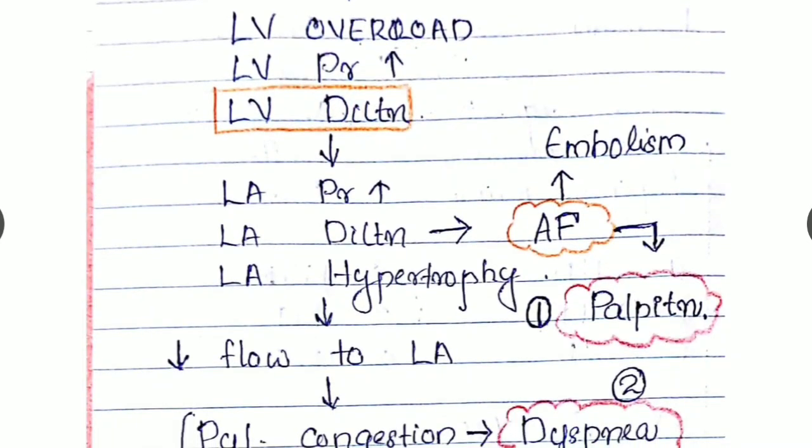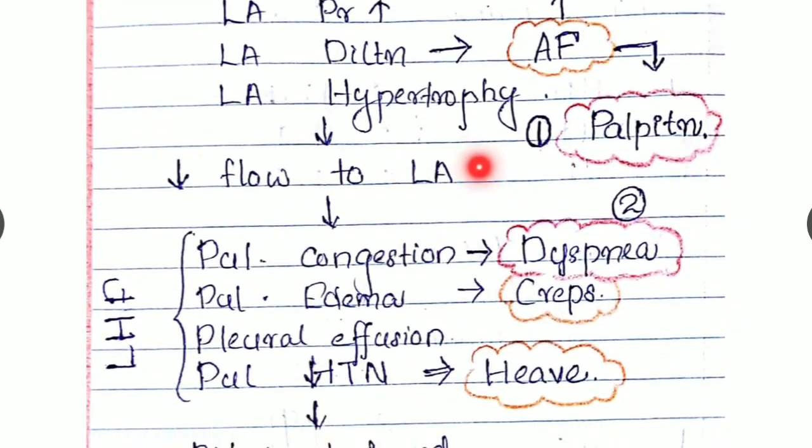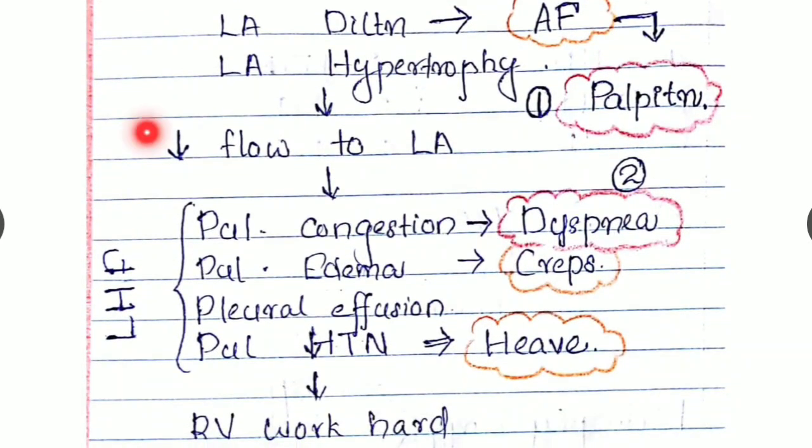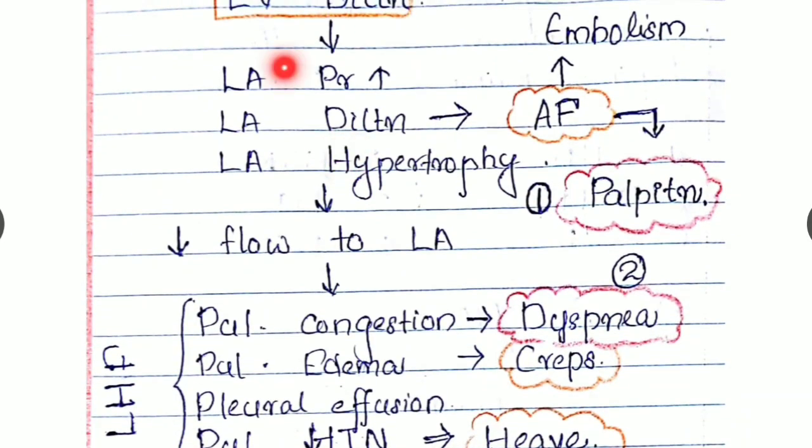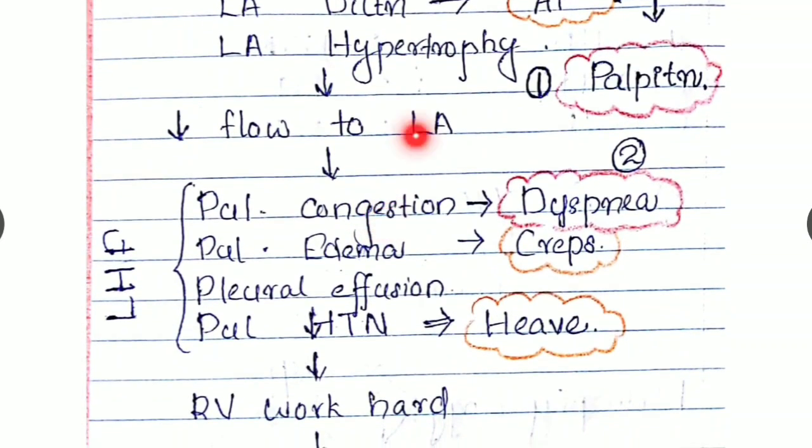As a result of regurgitation, left atrial pressure also increases. Left atrial dilation and hypertrophy can be seen. What happens then? As a result of increased left atrial pressure, the blood from the lungs cannot be sufficiently pumped into the left atrium.